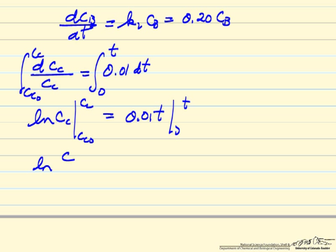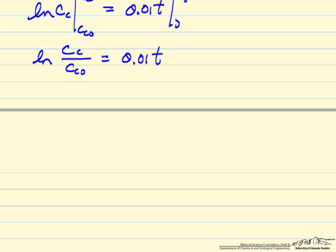So we know the log of the concentration of cells at any time over the initial concentration equals 0.01 times time. Or the other way we can write this is the concentration of cells is equal to the initial concentration of cells, exponential 0.01t. And you can see the same type calculation for the concentration of bacteria, exactly the same but with a different rate constant.